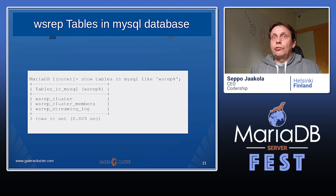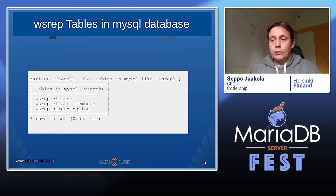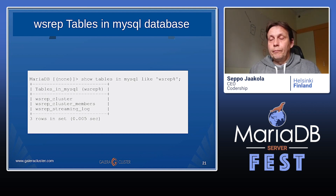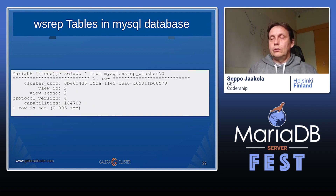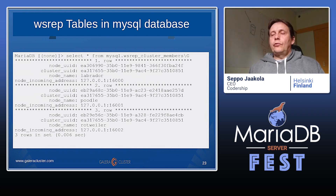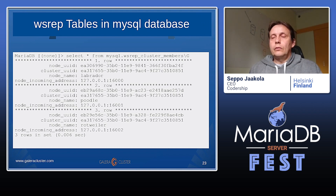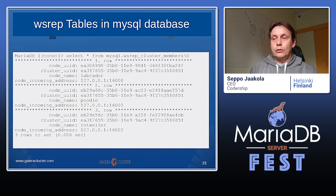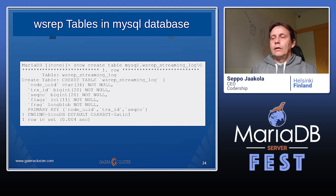Besides configuration variables and status variables, there are also three tables for cluster information. You can find these in the MySQL schema: vsrep_cluster, vsrep_cluster_members, and vsrep_streaming_log. The cluster table is just the definition of the cluster and its name. The vsrep_cluster_members table has more information — it lists all the active nodes or members of the cluster, their names, addresses, IP addresses, and UUIDs. So if the cluster size is three nodes, you should see three lines in this cluster members table.